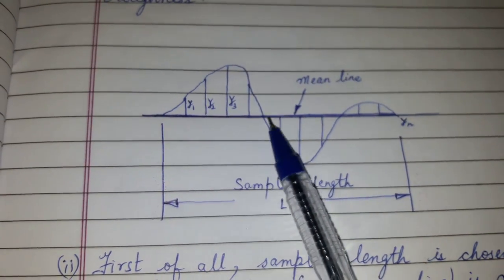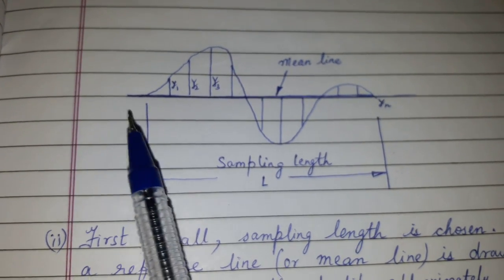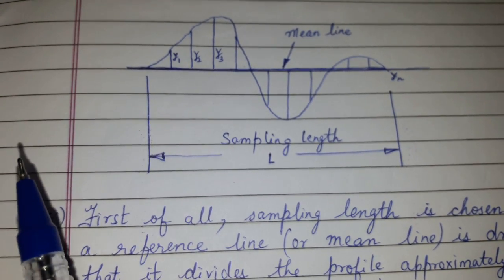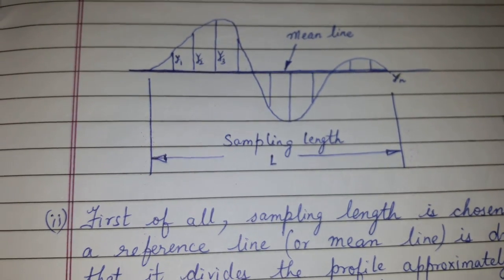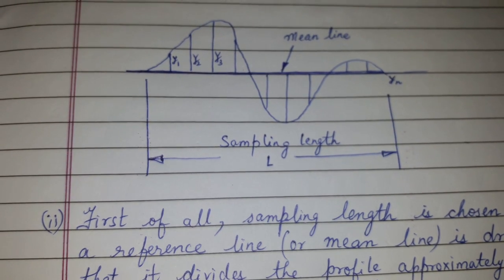Which you have selected, for example here it is taken n. So it can be 10, it can be 12, it can be 13—whatever the number of divisions which are divided for the sampling length.